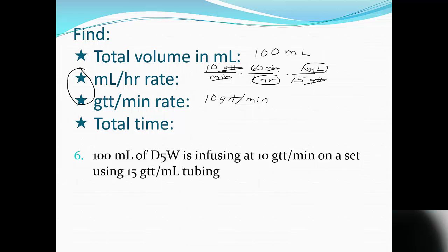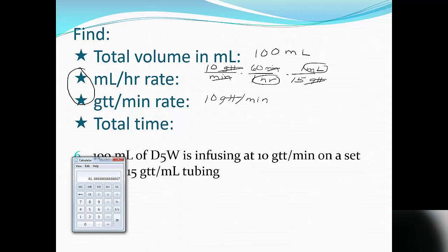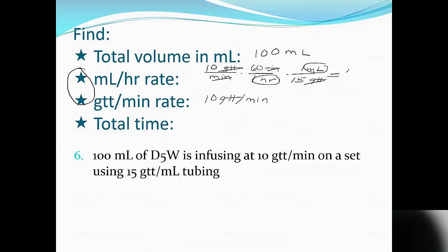So I go to my calculator, and we have 10 times 60 divided by 15. Oh, nice and even. So this gives us 40 milliliters per hour.